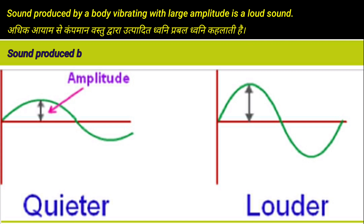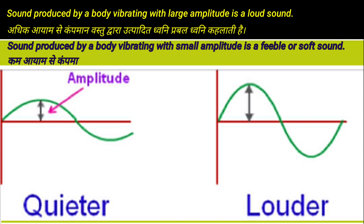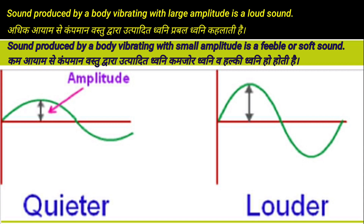On the other hand, a sound produced by a body vibrating with small amplitude is a feeble or soft sound. You can see the amplitude of vibrating bodies with low and high amplitude in the figure.